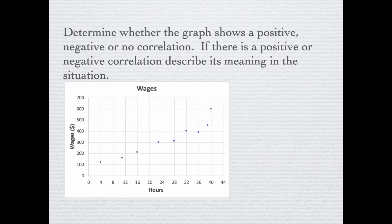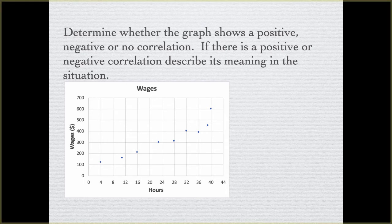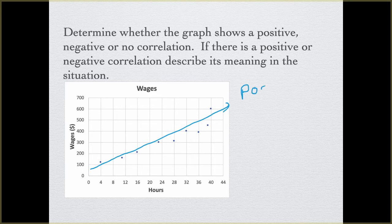Here it says to determine whether the graph shows a positive, negative, or no correlation. If there is positive or negative correlation, describe the meaning in the situation. So we look at this — if we could draw a line through these points, you could draw a line that would roughly look like this. So we can draw a line that represents the data. This has positive correlation, and the line has a positive slope.